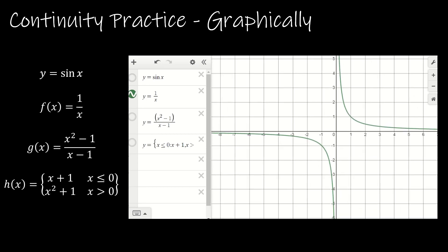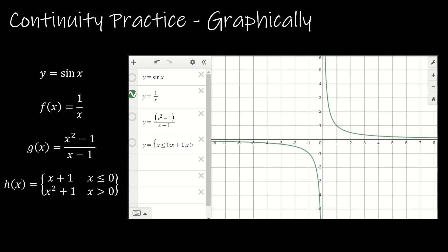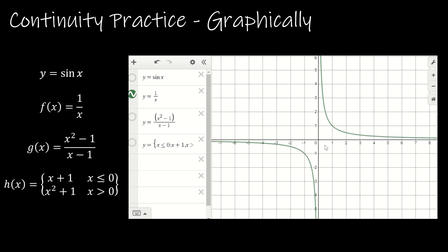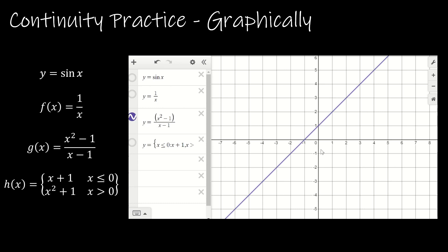Our next function was y equals 1 over x. We talked about the fact that it was discontinuous at 0, and that it approached negative infinity from the left and positive infinity from the right. We can see exactly what's happening — our function is going in different directions. That's clearly a non-removable discontinuity.